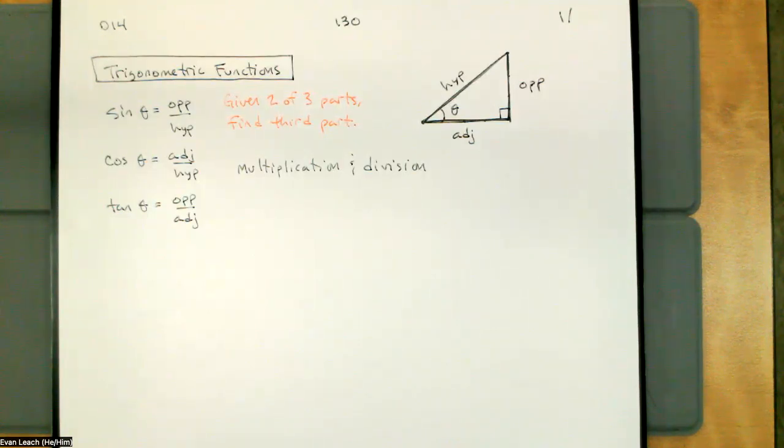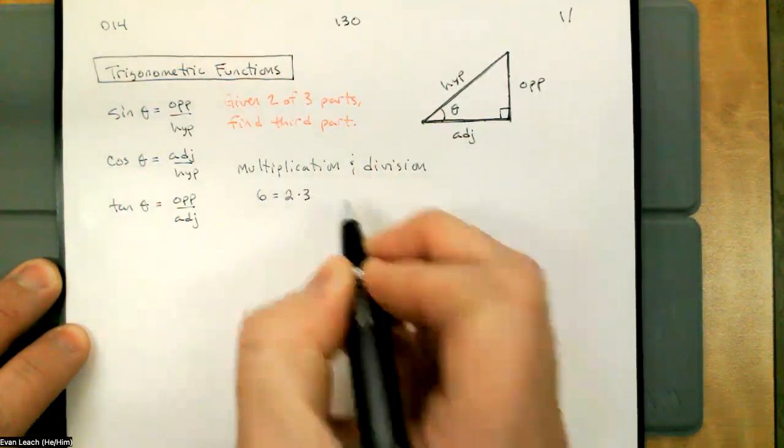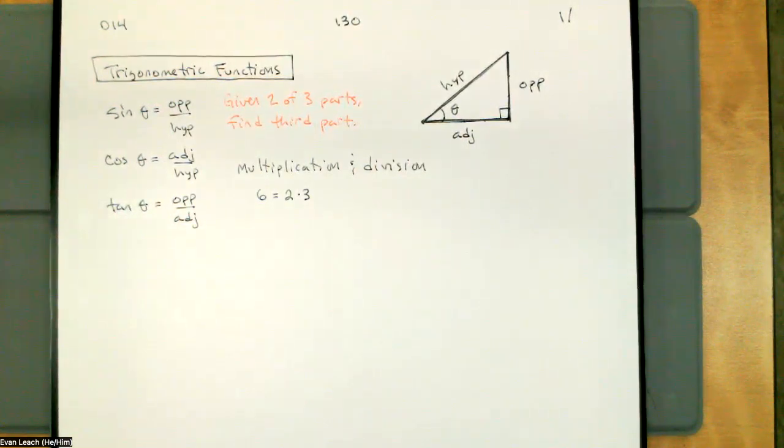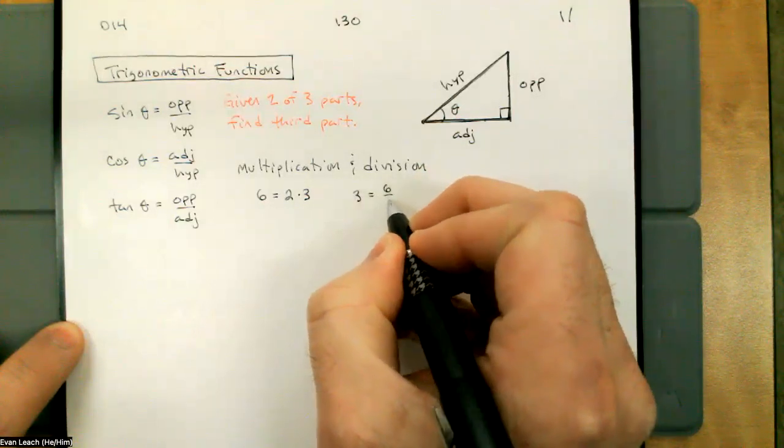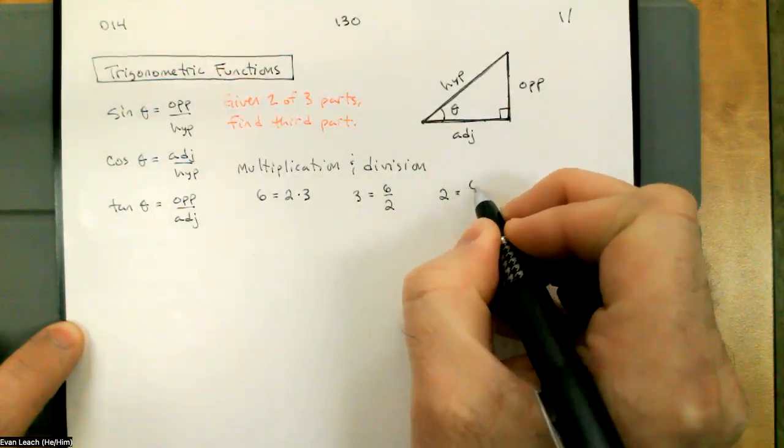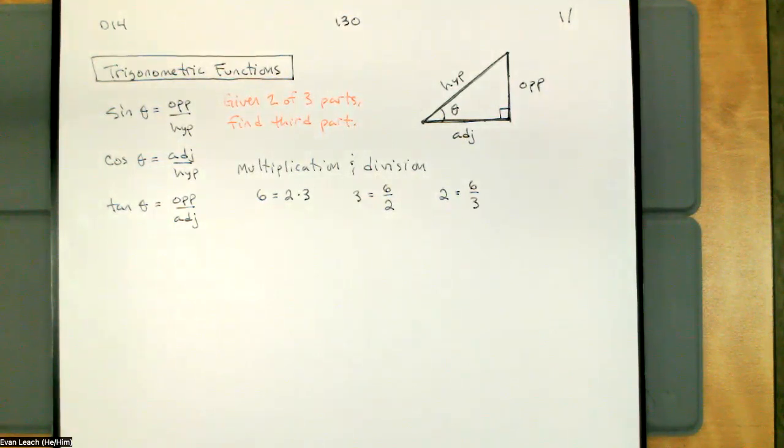This is what I like to remember in terms of multiplication and division. Six is equal to two times three. That's not shocking. There's two other pieces of information that are related to this. Three is equal to six divided by two, and two is equal to six divided by three. This is just how these three things are related. This is how multiplication and division are related.